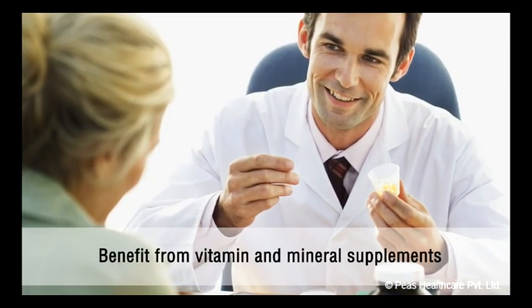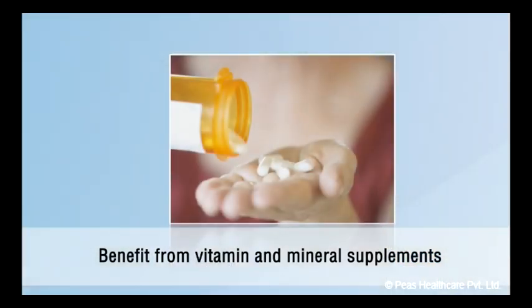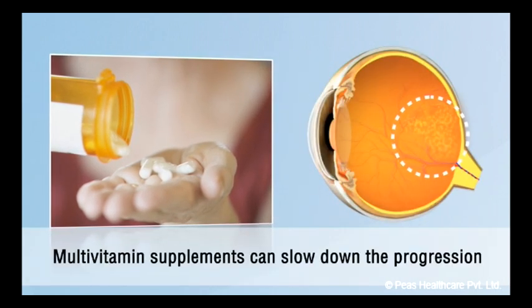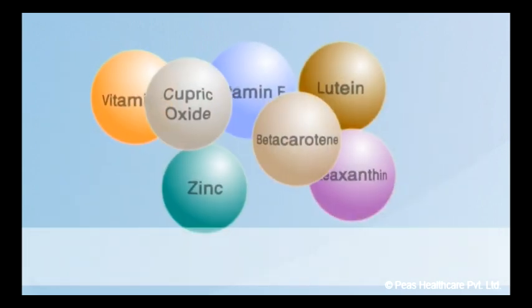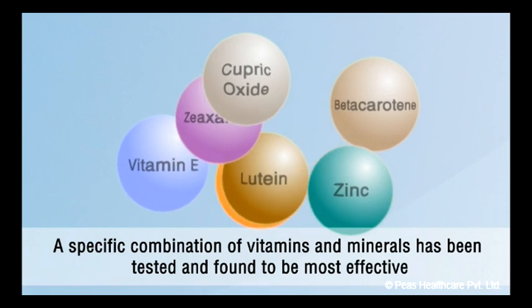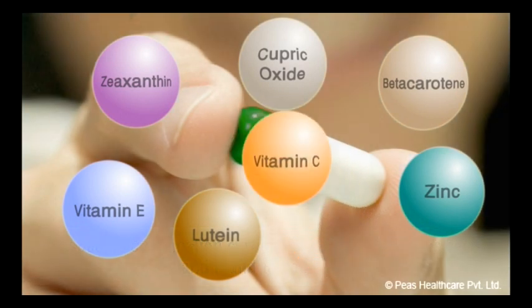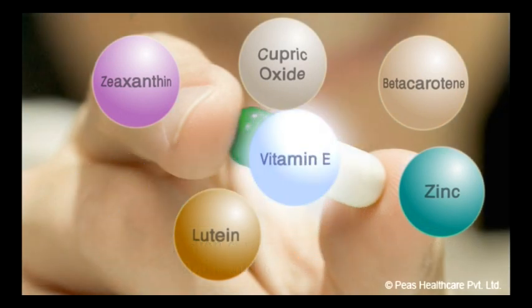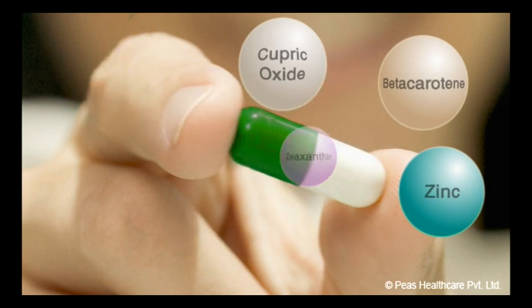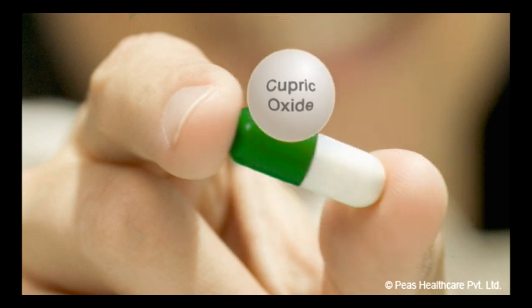Certain groups of patients with ARMD, both wet and dry types, can benefit from vitamin and mineral supplements. A specific combination of vitamins and minerals has been tested and found to be most effective. The mixture includes vitamin C, vitamin E, lutein, zeaxanthine, beta-carotene, zinc and cupric oxide.